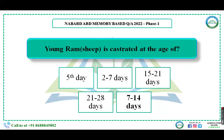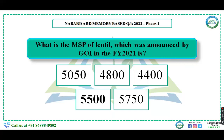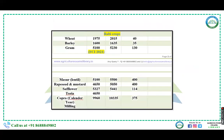What is the MSP of lentil announced by the Government of India in the financial year 2023? Options were 2150, 5040, 800, 4400, 5500, and 5750. The right answer is 5500.